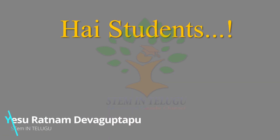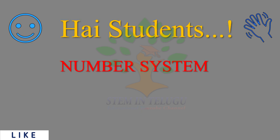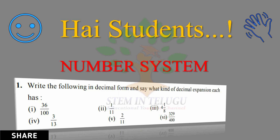Hi students and friends. In this video we are discussing the number system chapter. In this chapter, we are discussing the first sum: write the following in decimal form and say what kind of decimal expression each has. The fractions in decimal form can be of type terminating and non-terminating.